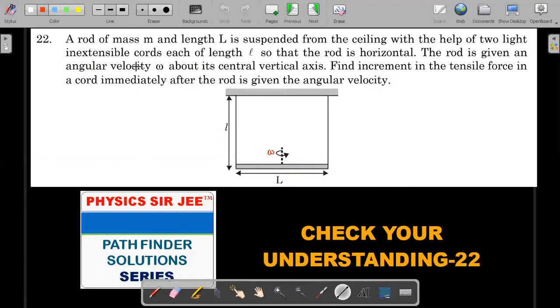So the important points that we need to think in this particular problem before going ahead is there are inextensible cords and this is all in vertical plane. So maybe the author of the question forgot to give that there is a g. So g is important for this question. And also he's asking for your calculations immediately after the rod is given angular velocity. So these are the important things. So let's move ahead for the solution of the question.